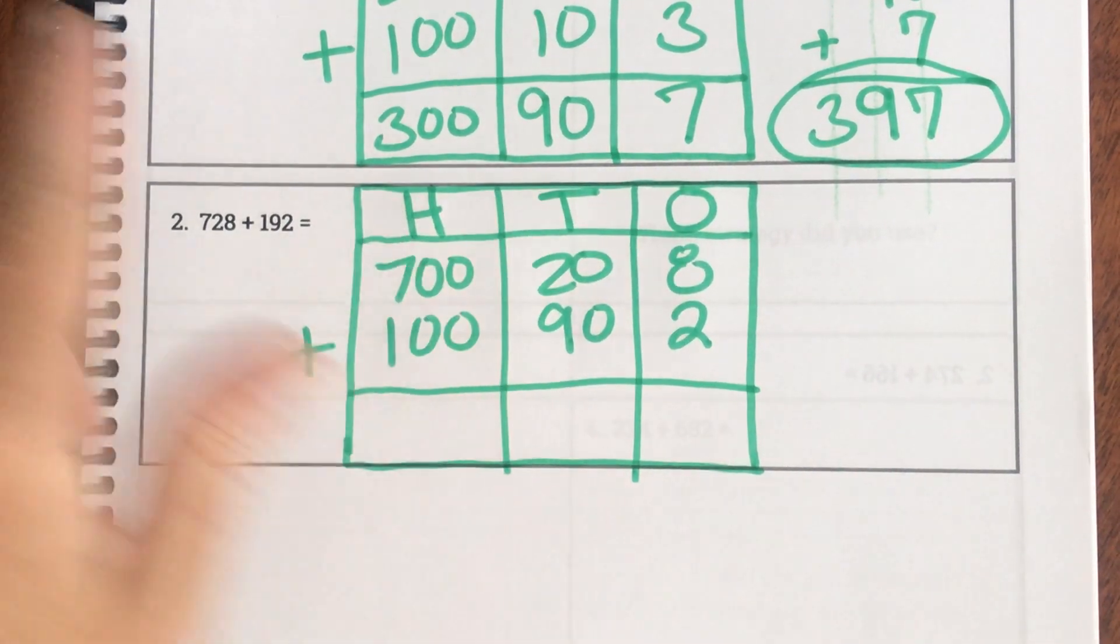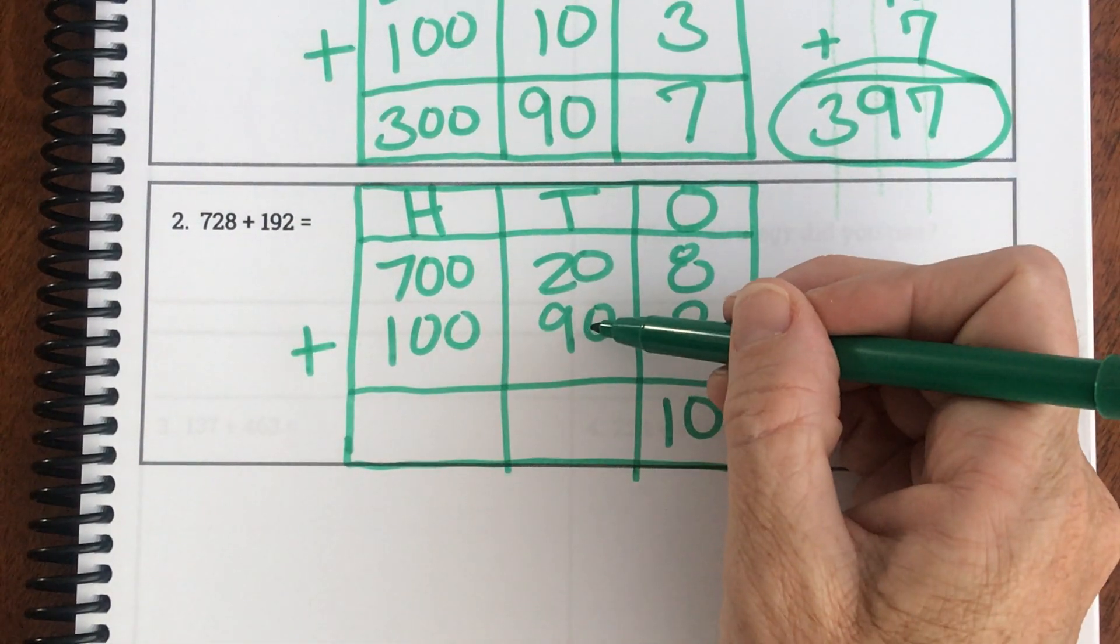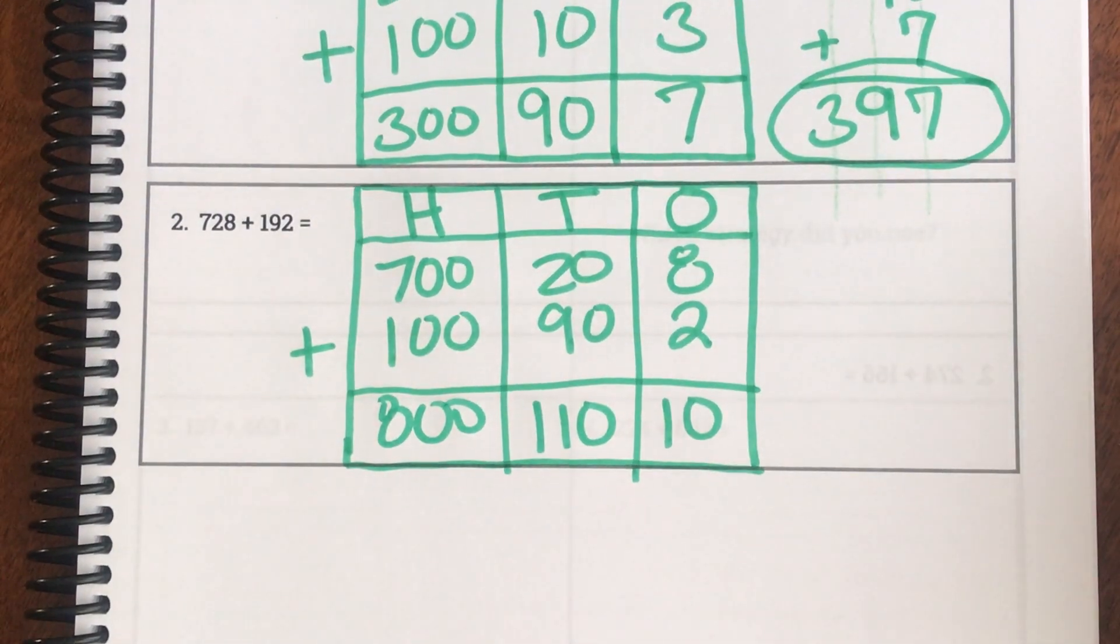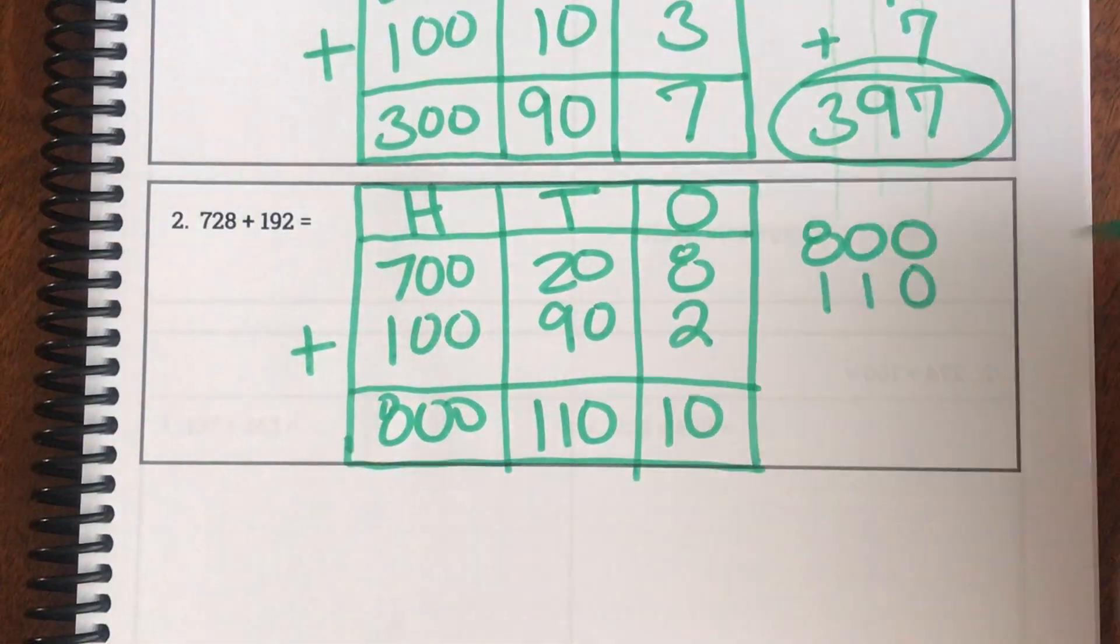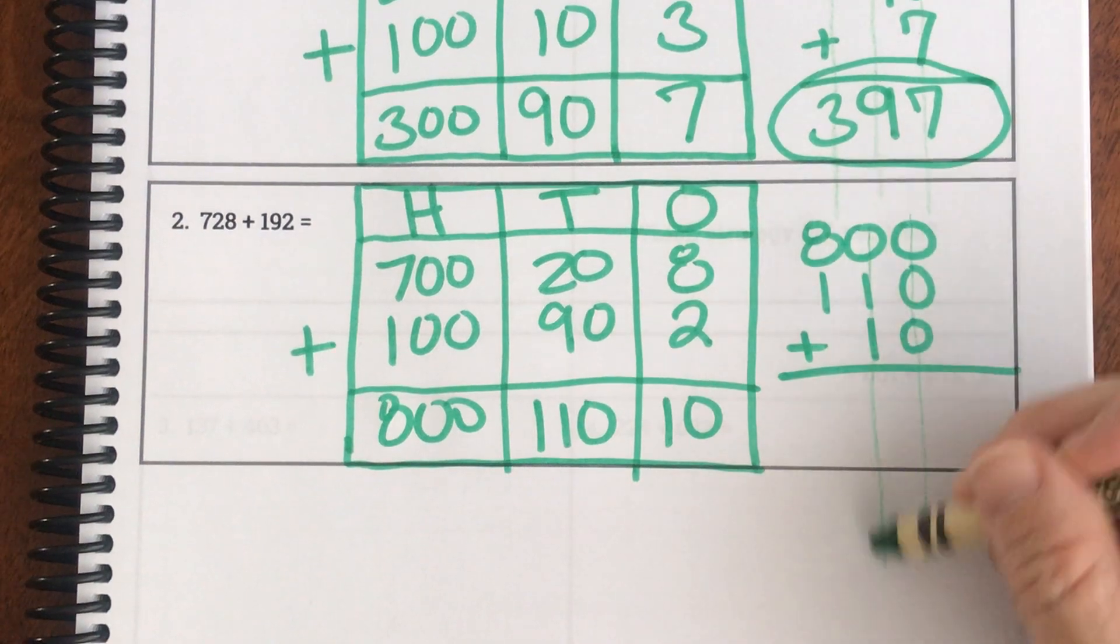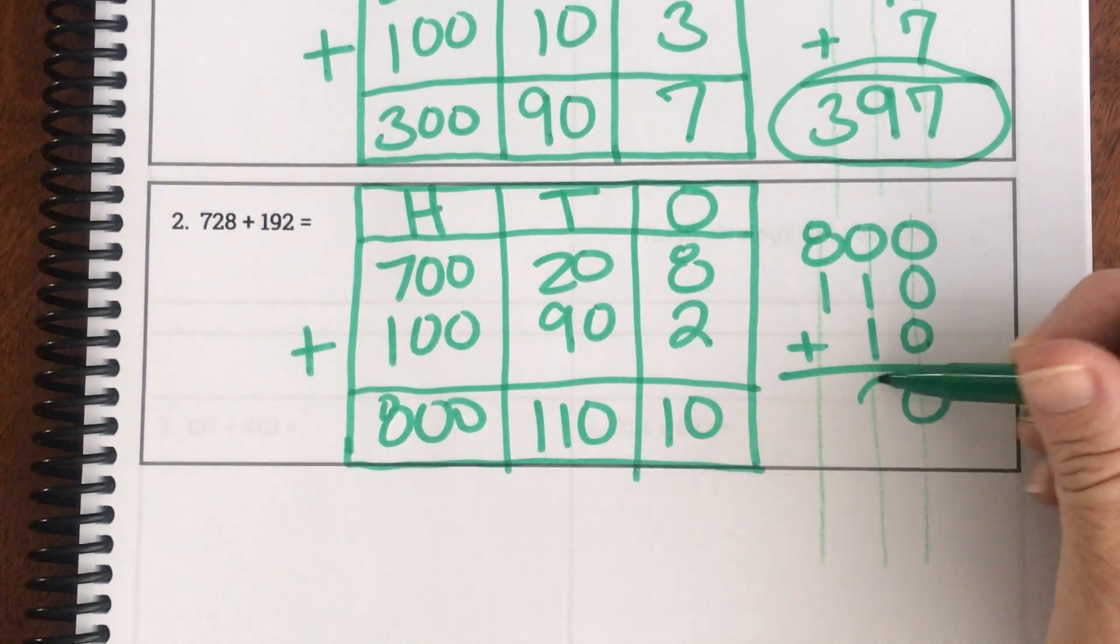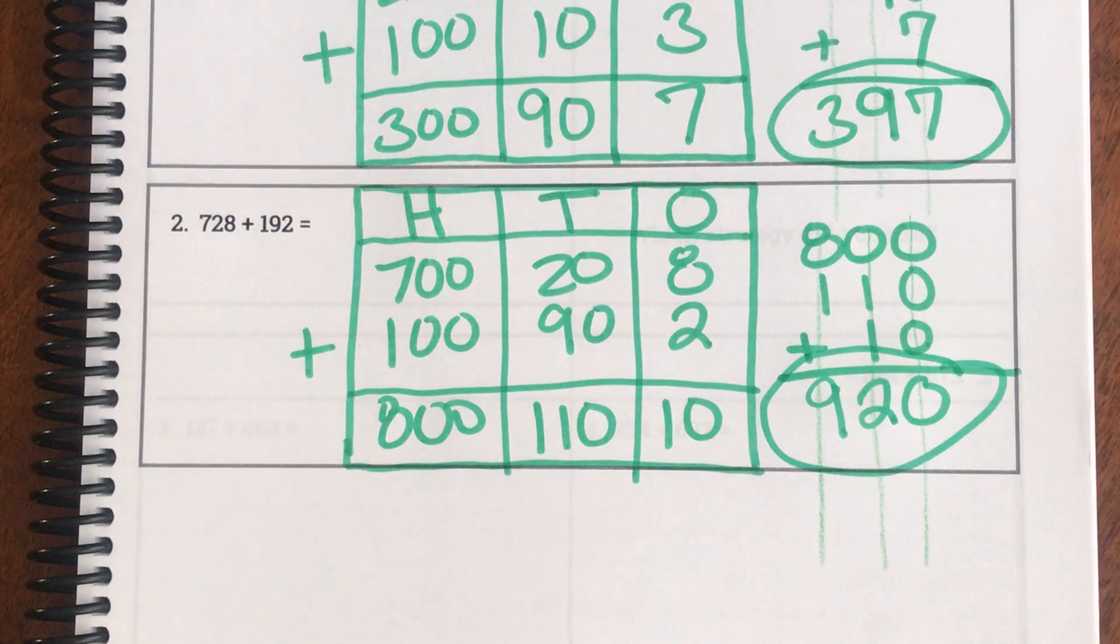Now it's going to be step 2, step 3, and step 4. So 8 + 2 is 10. 20 + 90, well, 10 + 90 is 100, and one more 10 would be 110. And 700 + 100 is 800. So what do we have? We have 800 + 110 + 10. Again, double check. How are they added? Are they lined up your digits? Hopefully. 0 + 0 + 0 is 0. 0 + 1 + 1 is 2. And 8 + 1 is 9. So our answer is 920.